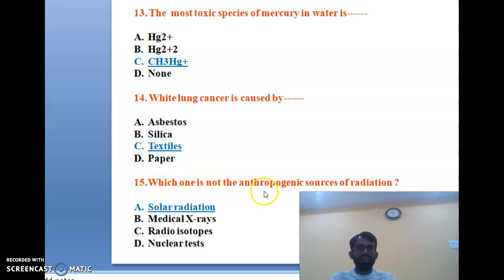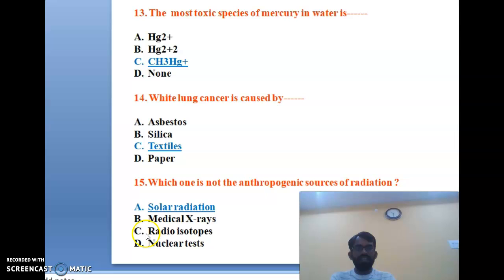The fifteenth question: which one is NOT an anthropogenic source of radiation? Options are solar radiation, medical X-rays, radioisotopes, and nuclear tests. Solar radiation is not an anthropogenic source. The correct answer is A, solar radiation.